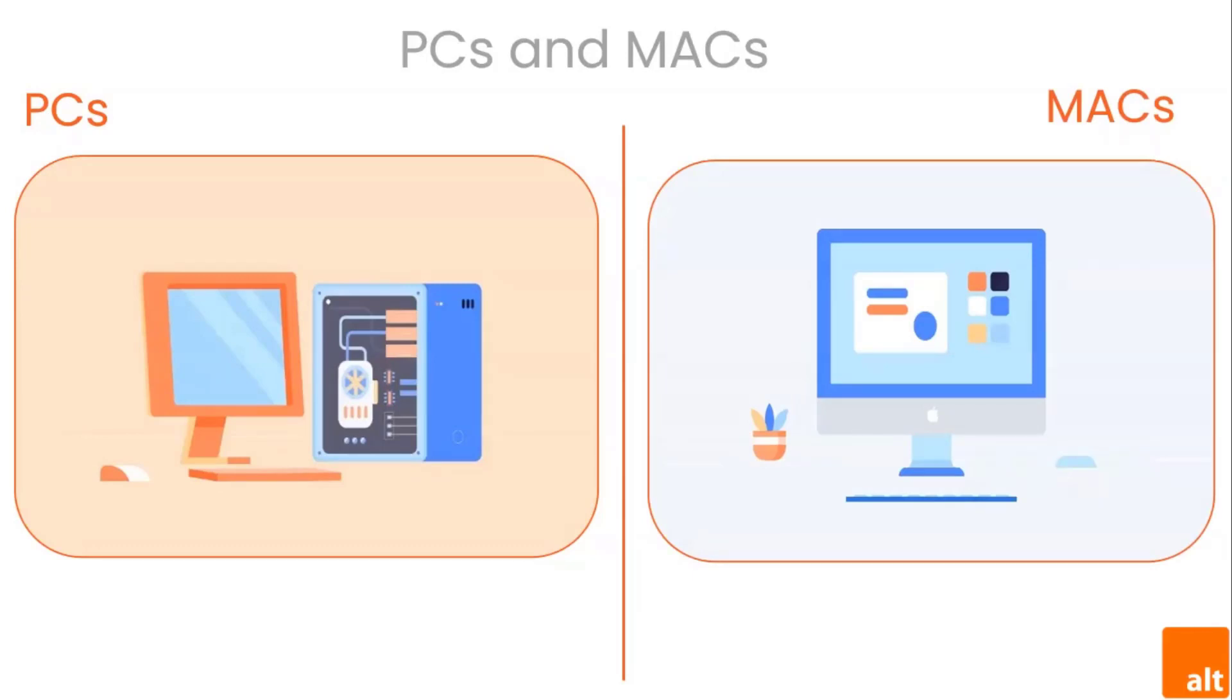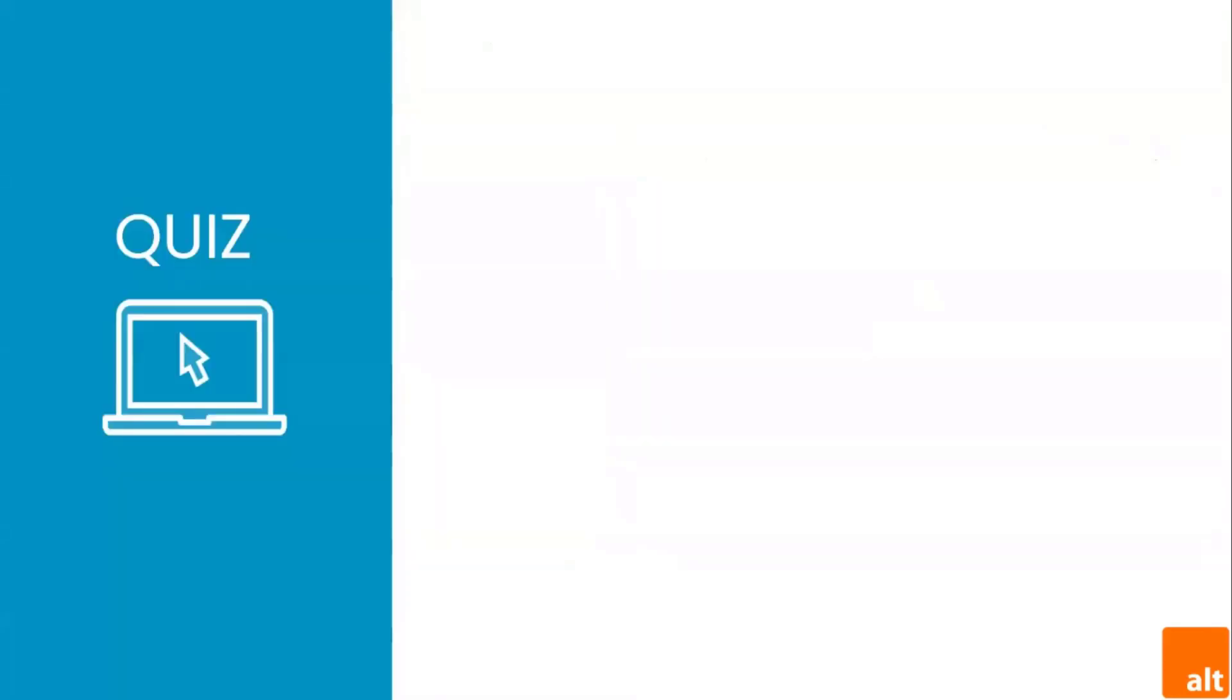The Macintosh computer was introduced in 1984 and it was the first widely sold personal computer with a graphical user interface, or GUI, pronounced 'gooey.' All Macs are made by one company, Apple, and they almost always use the Mac OS X operating system.